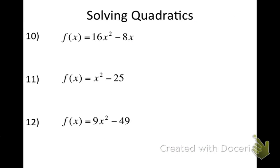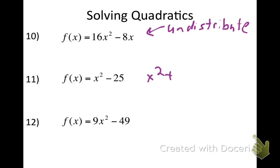These next three are a little more challenging. For number 10, look to undistribute first — pull out what they have in common. For number 11, think of it as x squared plus 0x minus 25, which helps with the difference of squares. For number 12, that's the difference of squares — look at your square roots.